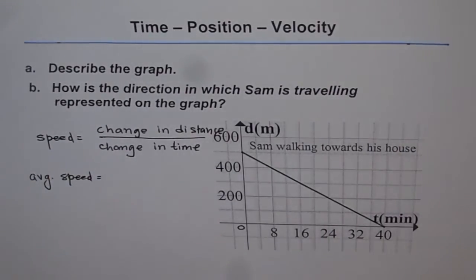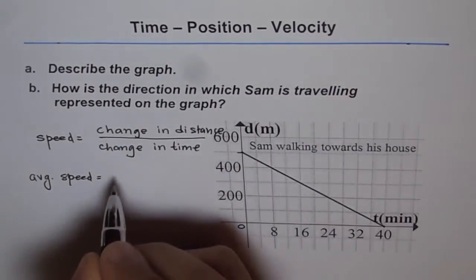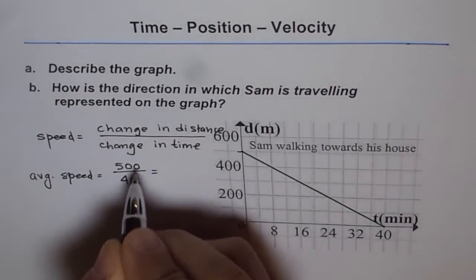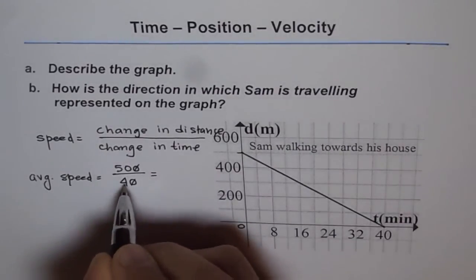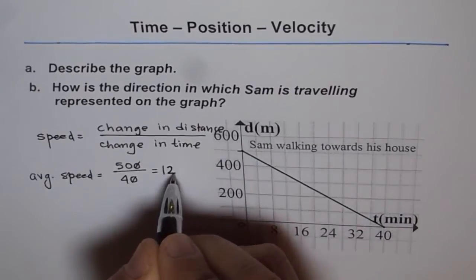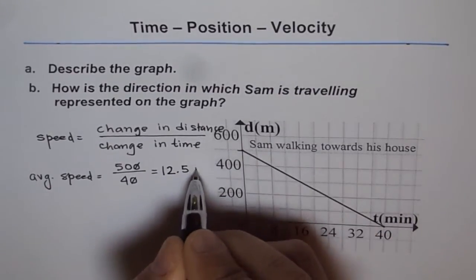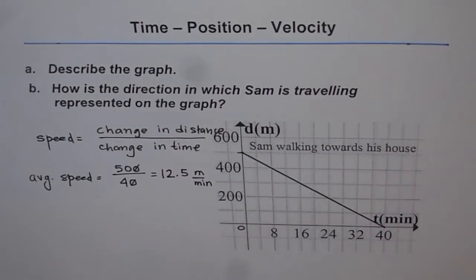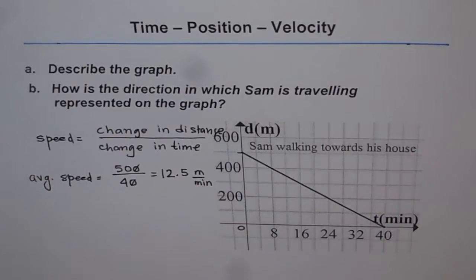So if you divide 500 by 40, you get 12.5 meters per minute. So if you calculate the average speed, then your story could be that Sam started walking towards the house at an average speed of 12.5 meters per minute. He was 500 meters away from the house and covered the total distance in 40 minutes. That is a story with more depth which earns you extra marks.